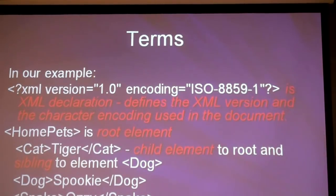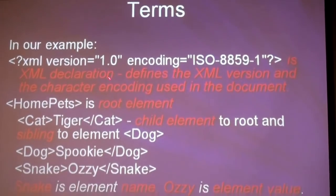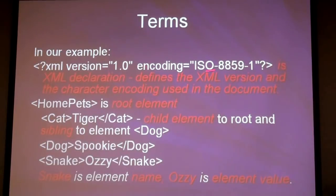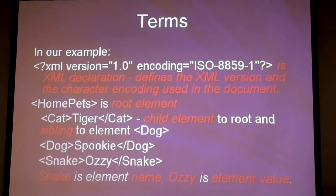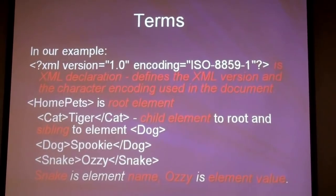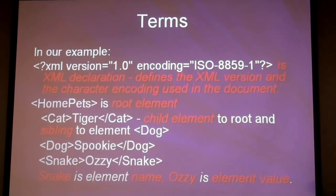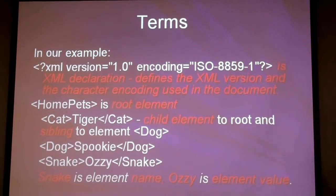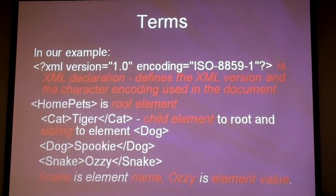Demonstrating the exercise: create elements like 'first_name' with value 'Alex', 'last_name', 'age' with value 45, 'occupation' with value 'driver', and then wrap everything in a root element called 'relatives' with an opening and closing tag. Don't forget to put the root element — that's a common mistake. When saved and loaded in a browser, the document should display correctly.